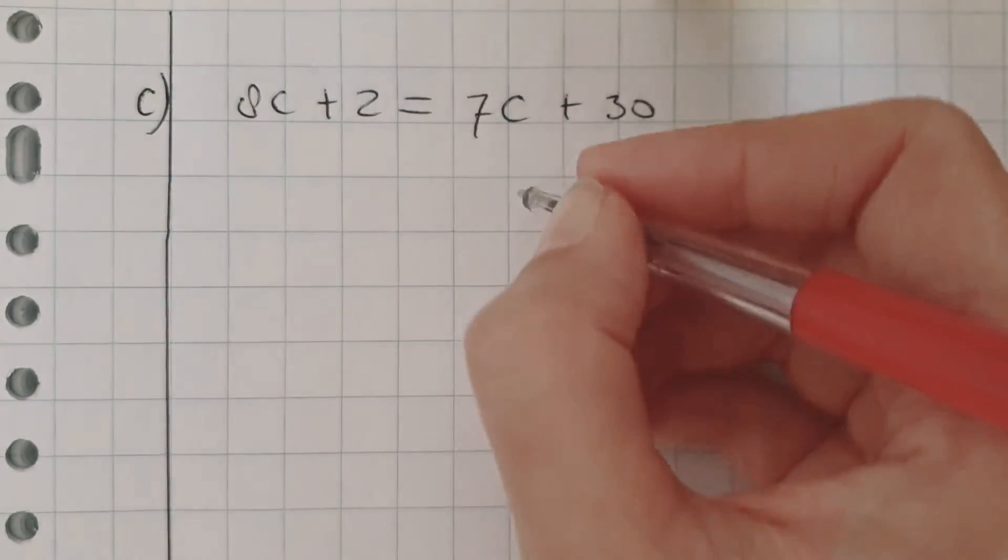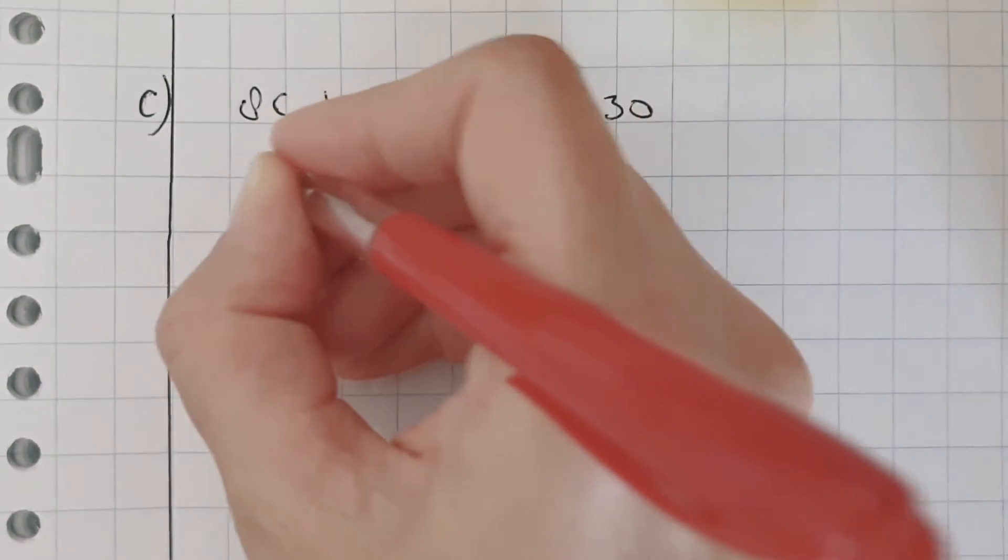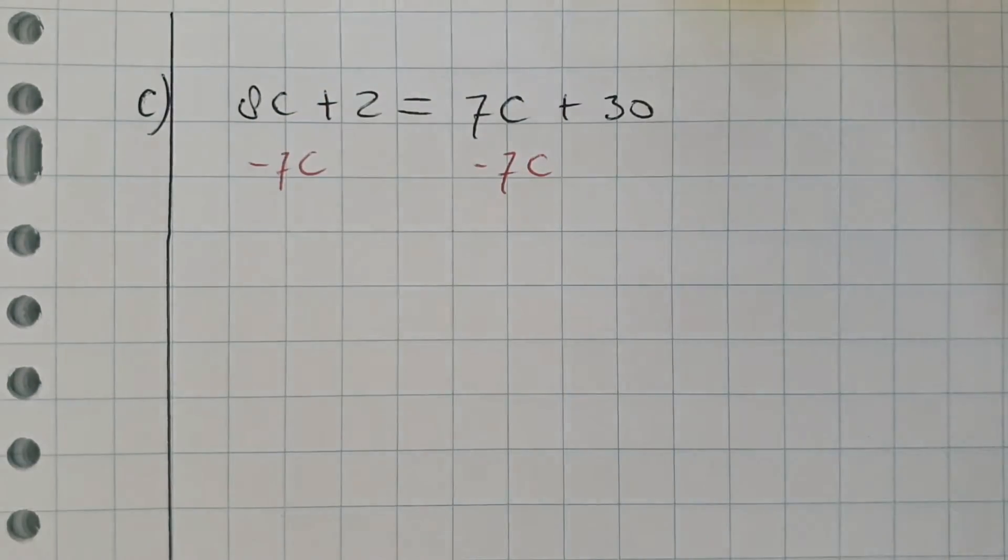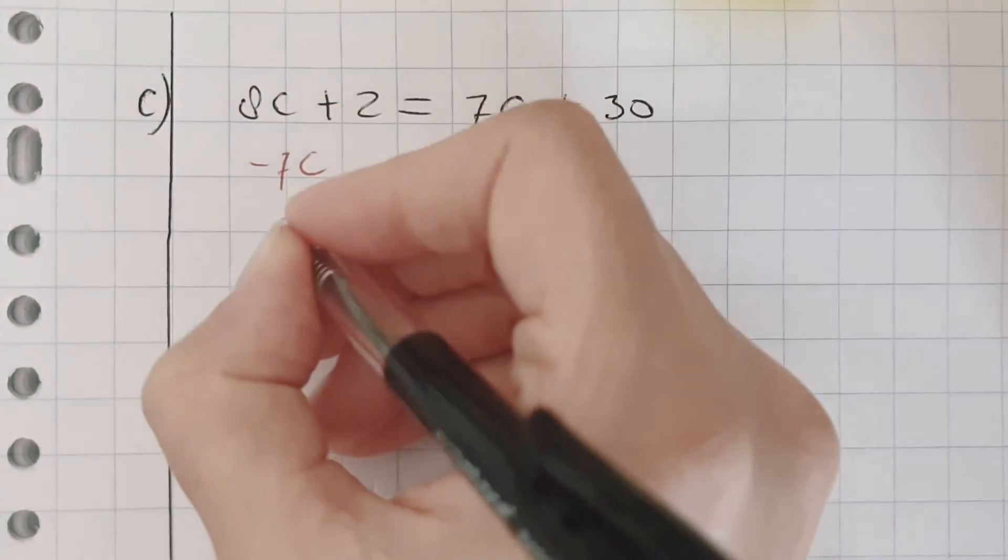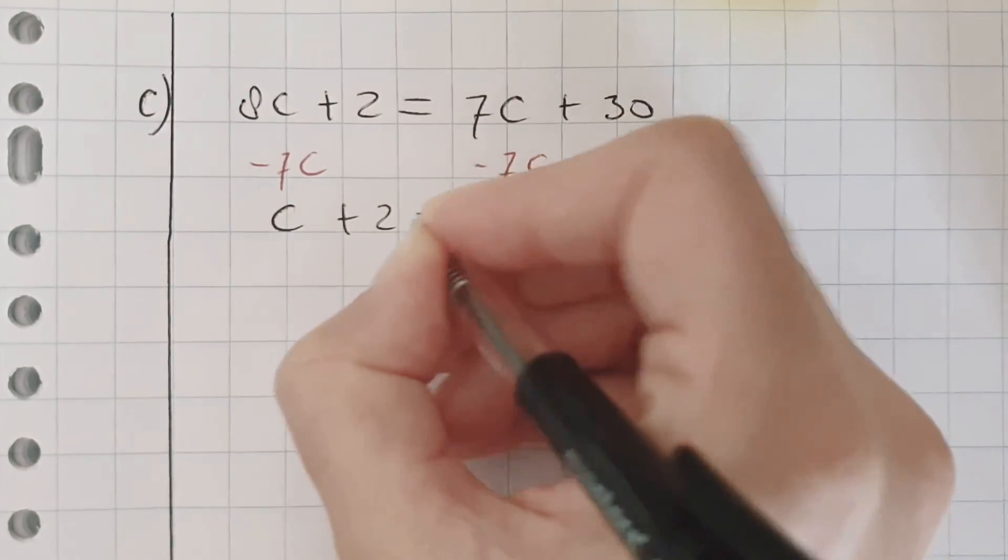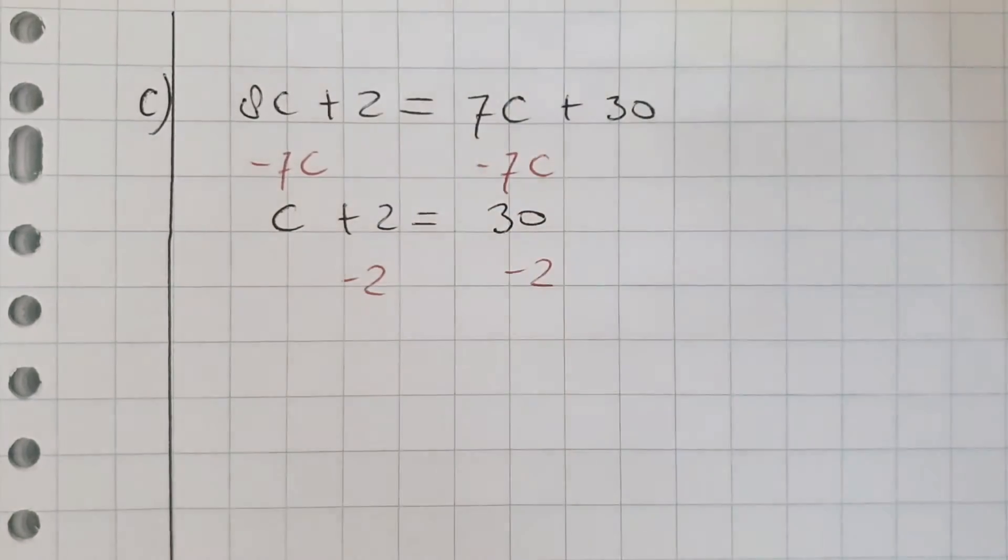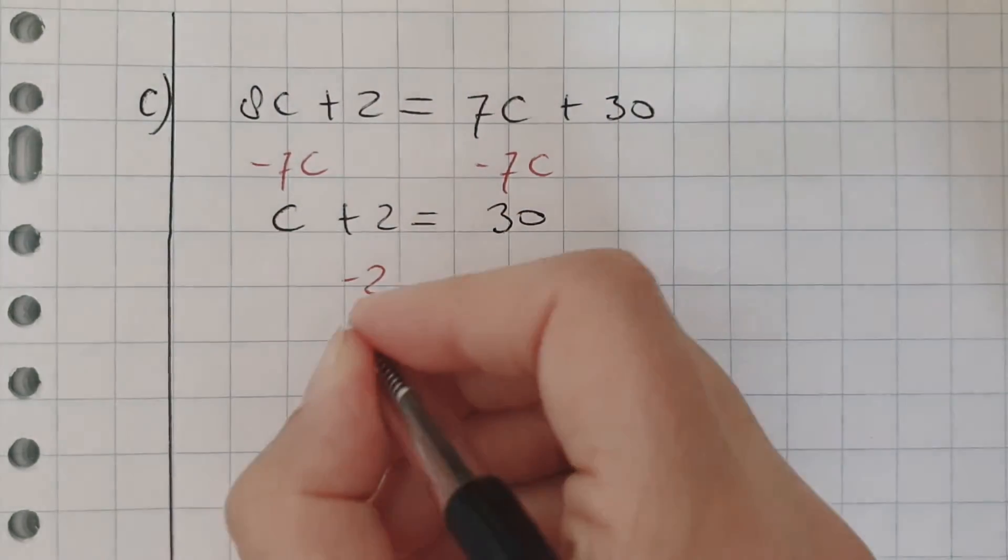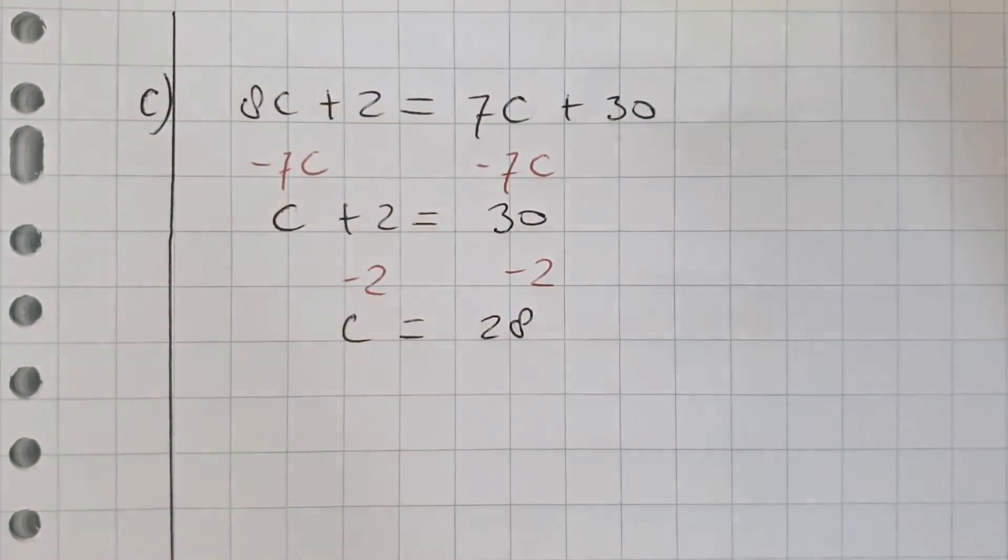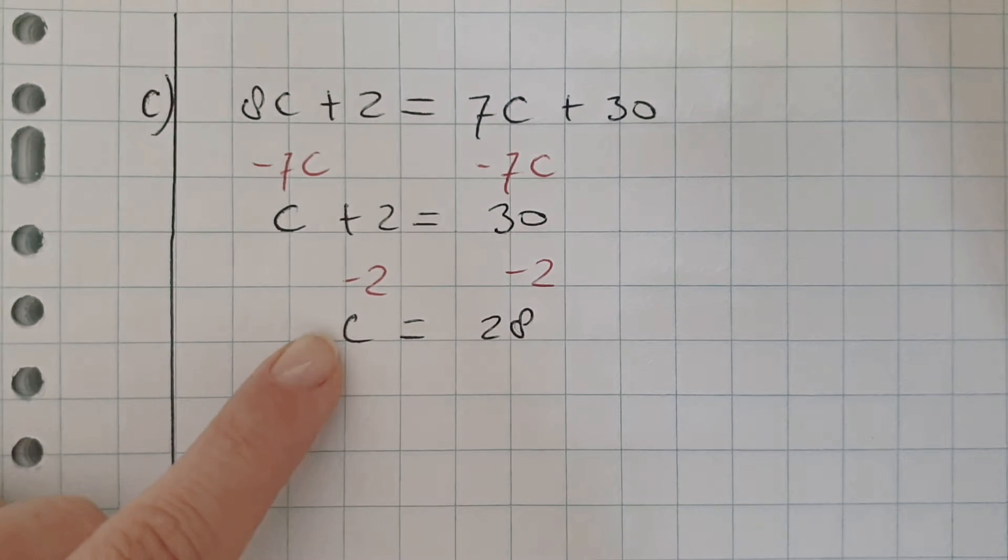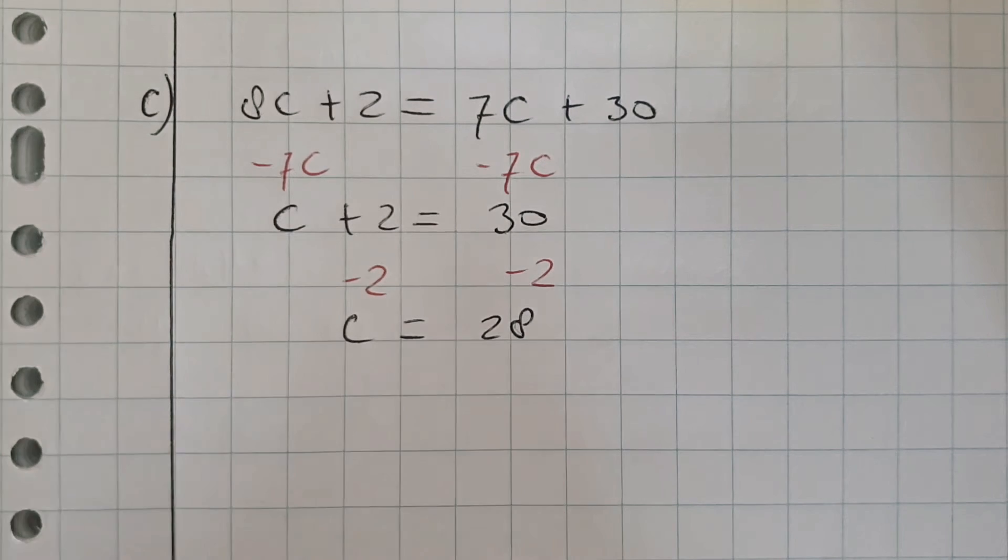Let me start with the letter now. So minus 7c here, and minus 7c here. The leftover is 1c. Just write down c. And 30. Minus 2. C is 28. There's a 1 here. Usually you divide by the number in front of c, but you don't have to divide by 1. It's the same. So now we are actually already done.